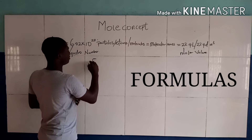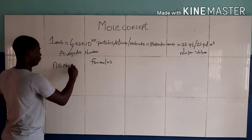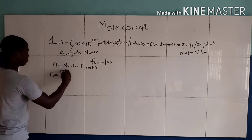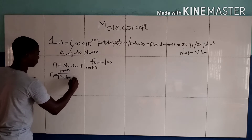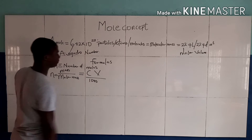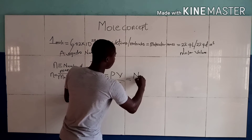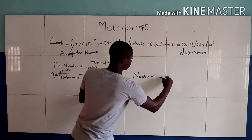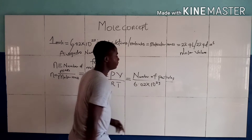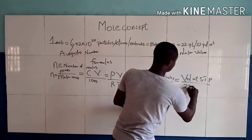The formulas needed for calculations on the mole concept: N implies number of moles, where N can be given as mass over molar mass; N can also be given as CV over 1000; N can also be given as PV over RT; N can also be given as number of particles over 6.02 times 10 to the power of 23; and N can also be given as volume at STP over 22.4 dm³.